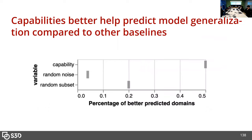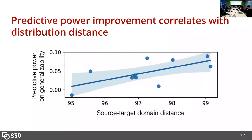Our results show that capabilities do indeed better help predict model generalization compared to other baselines. In one and a half cases, it significantly helps improve prediction of out-of-domain accuracy compared to baselines like just using random subset accuracy or random noise added to original accuracy. We also find that the predictive power improvement correlates with distribution distance — the further the target distribution is from the source domain, the more capability accuracy helps prediction, probably because if they're further away, the original accuracy doesn't help much in prediction.